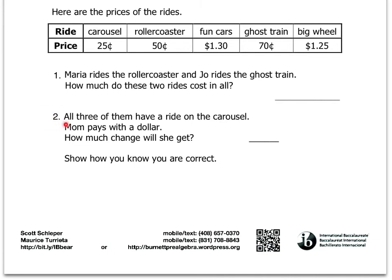And then number two, all three of them have a ride on the carousel. Mom pays with a dollar. How much change will she get? So you have to think how many people are riding the carousel and then compute how much total that would cost for mom to pay for it. And if she has a dollar, you're going to have to subtract the amount you get from $1. So you'll have to show that total here, how much change she'll actually get, not how much it costs to ride to pay for the three rides. And then you have to show all that work. This whole space here is for showing that work.